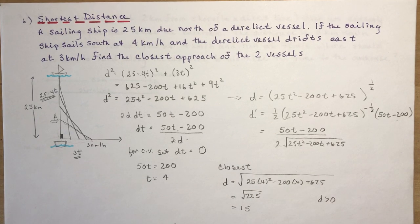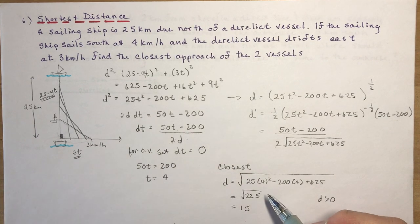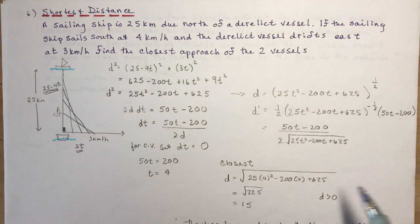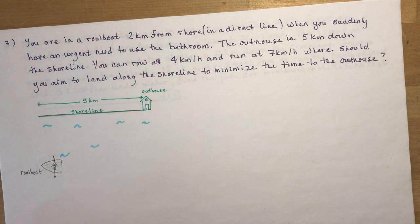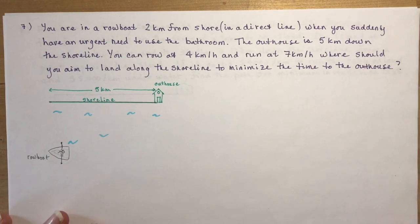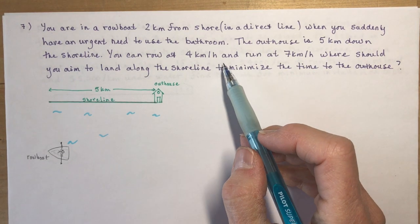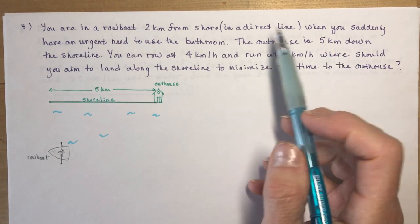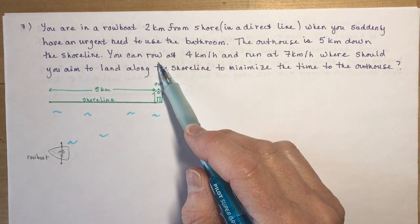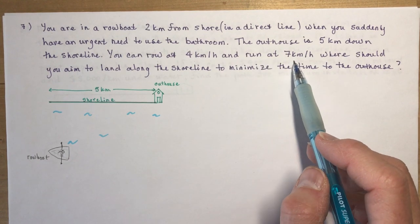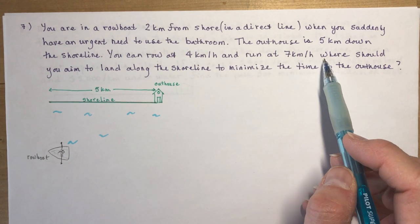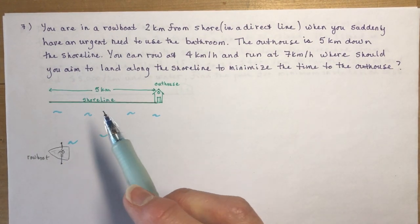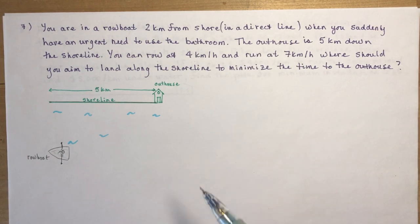Once you've seen one, most of these questions follow the same pattern — you're just finding the hypotenuse. Let's do the second question: you are in a rowboat 2 kilometers from shore in a direct line, when you suddenly have an urgent need to use the bathroom. The outhouse is 5 kilometers down the shoreline. You can row at 4 kilometers per hour and run at 7 kilometers per hour. Where should you aim to land along the shoreline to minimize the time to the outhouse?